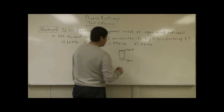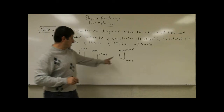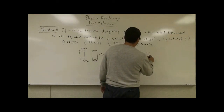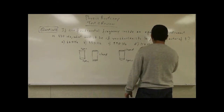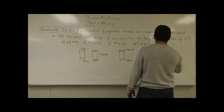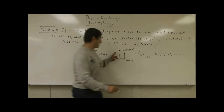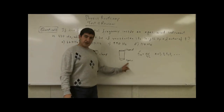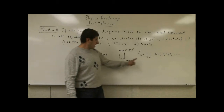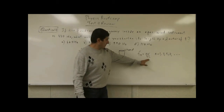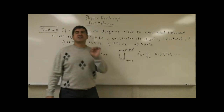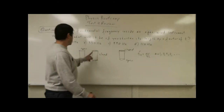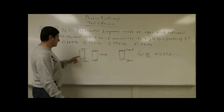For a pipe closed at one end and open at the other, the equation turns out to be f = nb/4l, where n is 1, 3, 5, 7, and so on. This kind of instrument is missing the even harmonics — the second harmonic, the fourth harmonic, and so on are all absent.